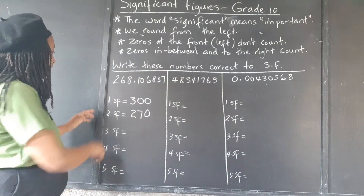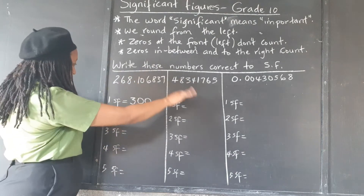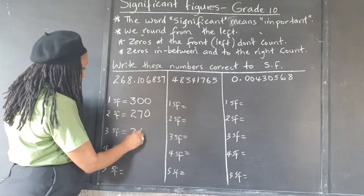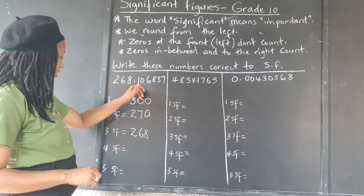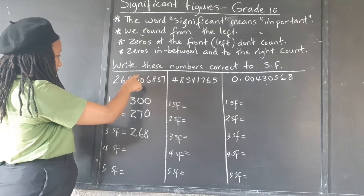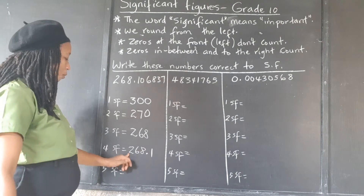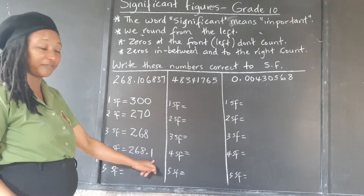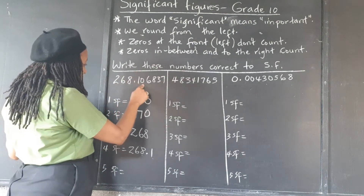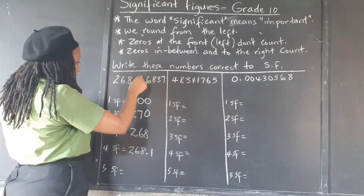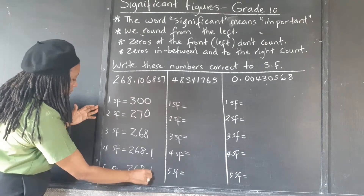Three significant figures — one, two, three. The digit beside it is less than five, so we ignore the rest and write 268. Four significant figures — one, two, three, four — the next digit is zero, so we don't add one. That's 268.1. Five significant figures — one, two, three, four, five — the next digit is more than five, so we add one. That gives us 268.11.